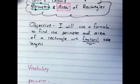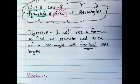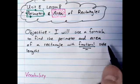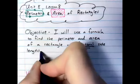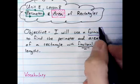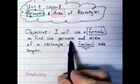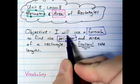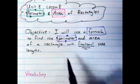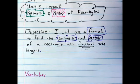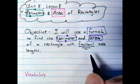Let me just do a quick adjustment. There we go. Objective: I will use a formula to find the perimeter and area of a rectangle with fractional side lengths.